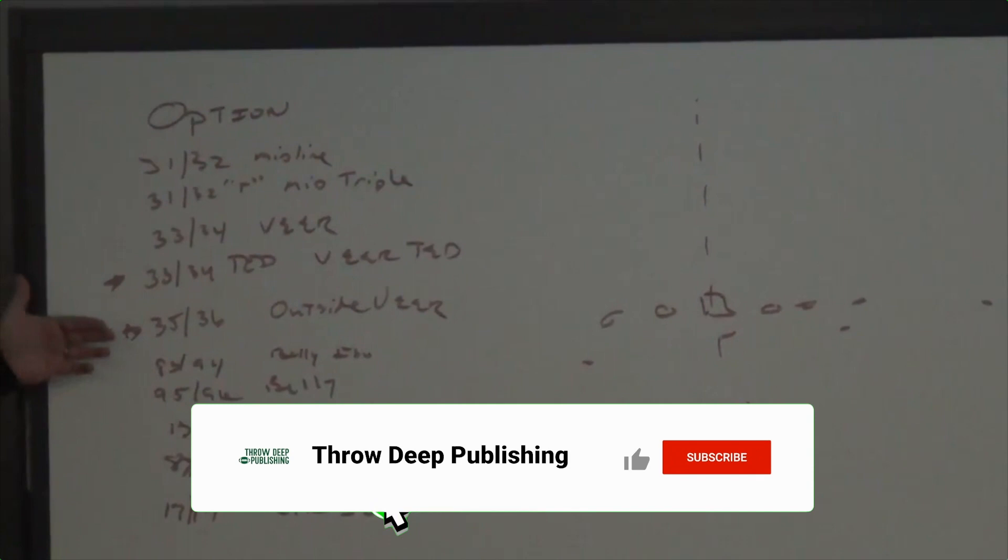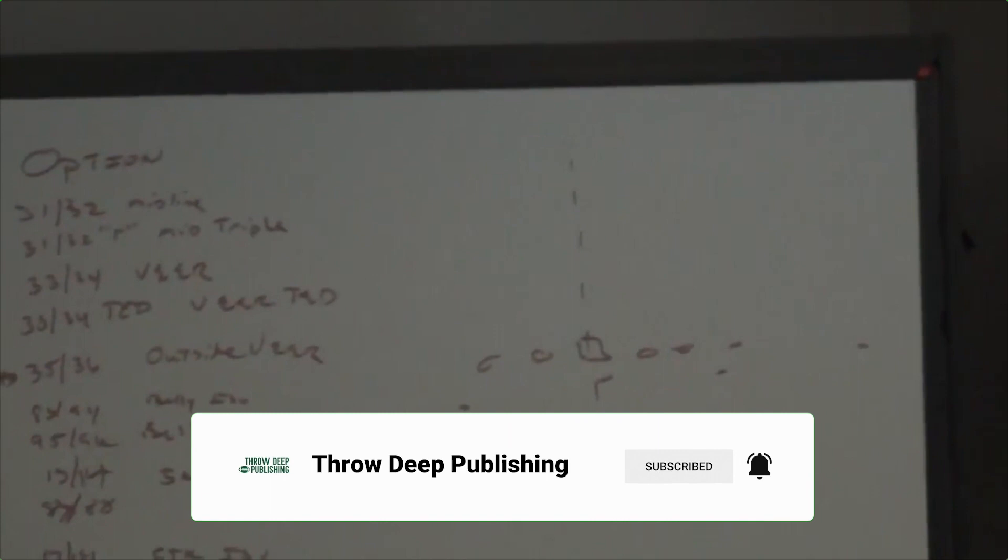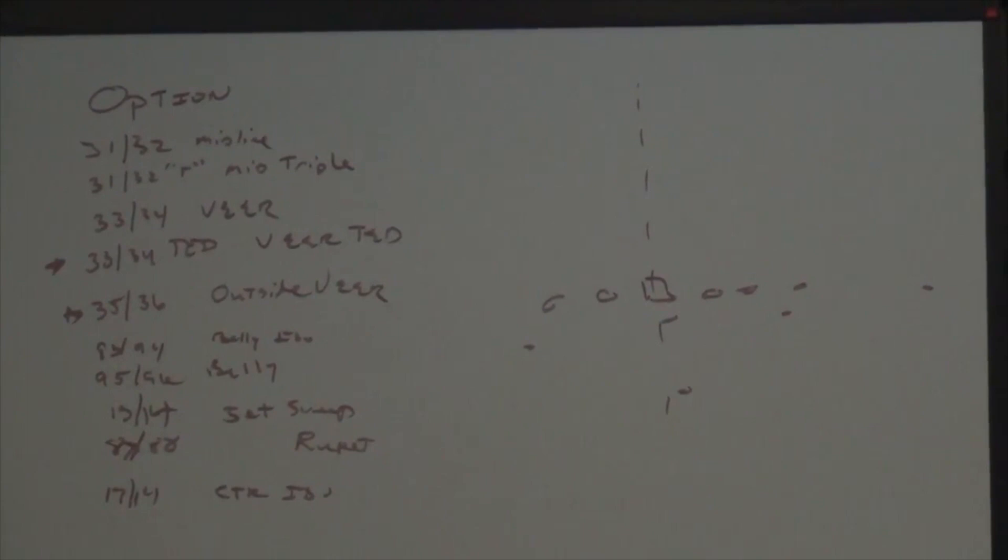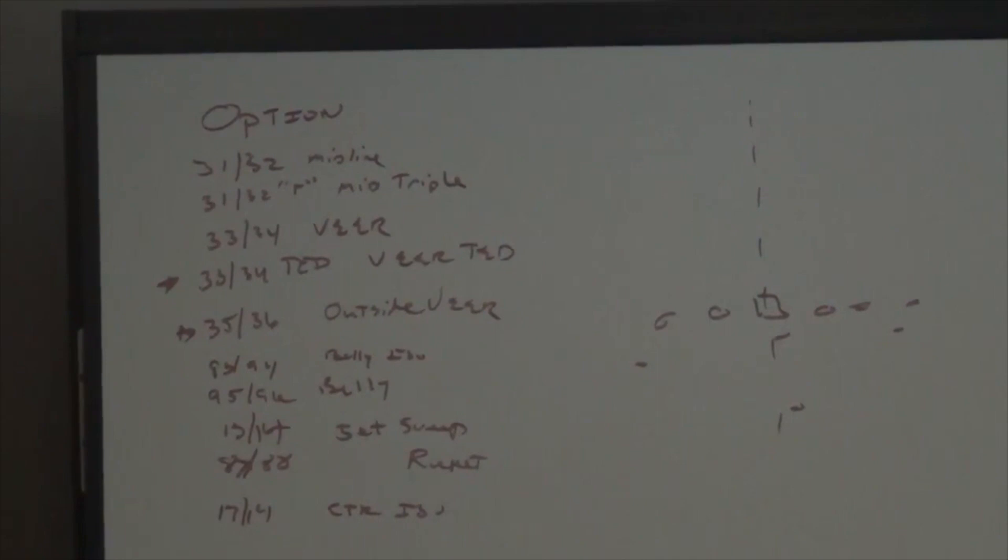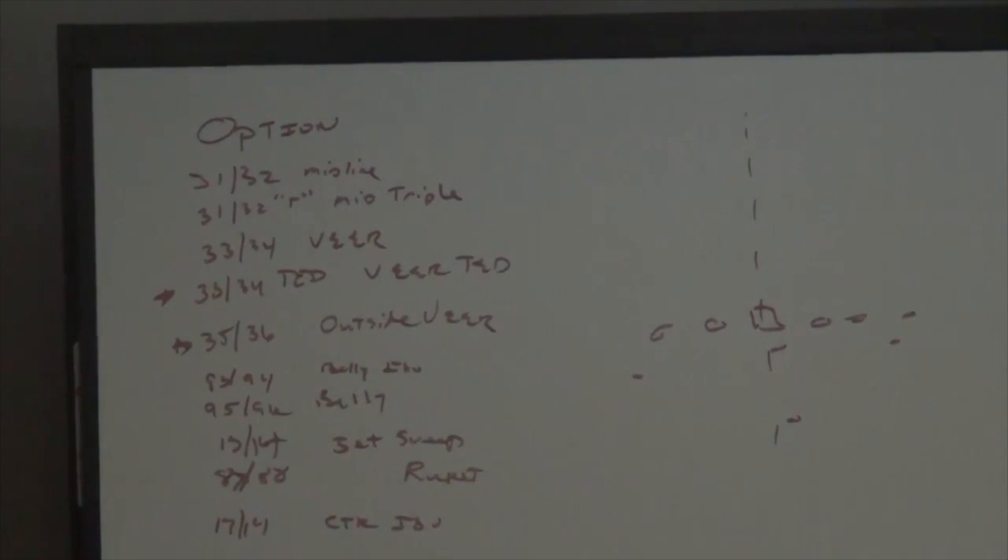Inside Veer, Veer-Ted, and Outside Veer are our main option plays. We think we can run that against any front. We also run Belly Isol, Belly G, Belly Hobson, Wink Counters, Jet Sweep, Rocket, and County Isol. People say oh my God you guys do a lot of stuff. Yeah we do.